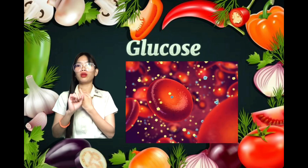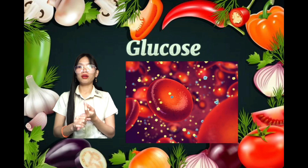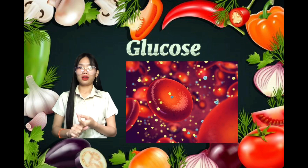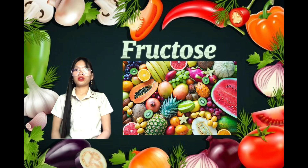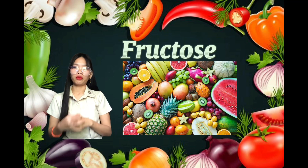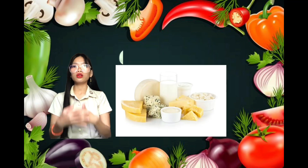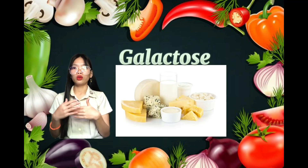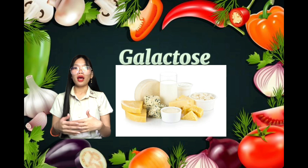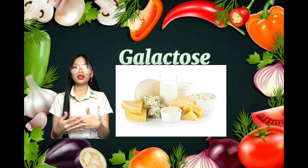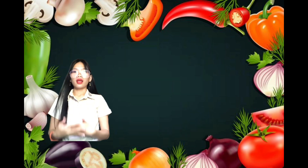Glucose is also called blood sugar and it is found in the bloodstream. Fructose is also called fruit sugar and it is found in fruits. Galactose is a sugar that is about as sweet as glucose and about 65% as sweet as sucrose.